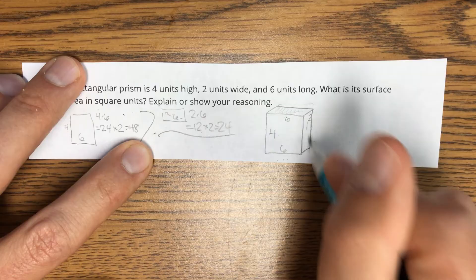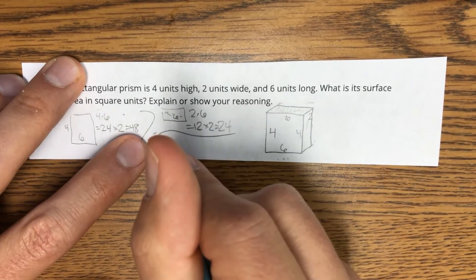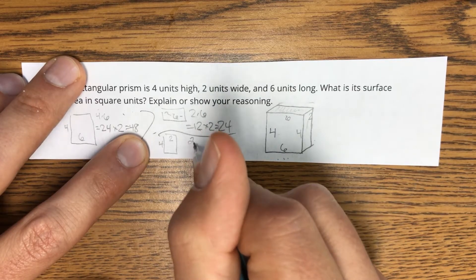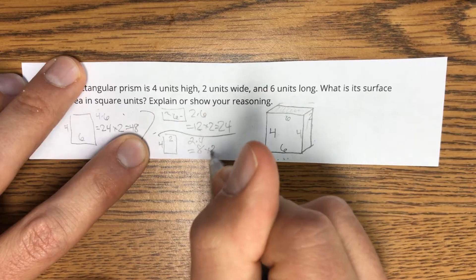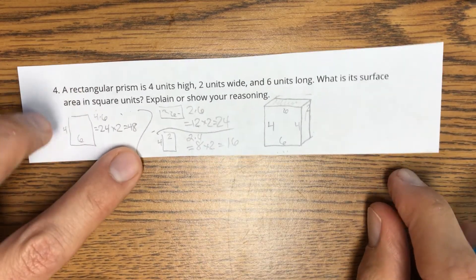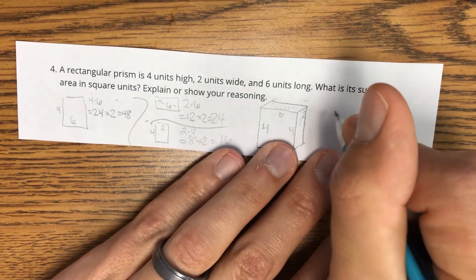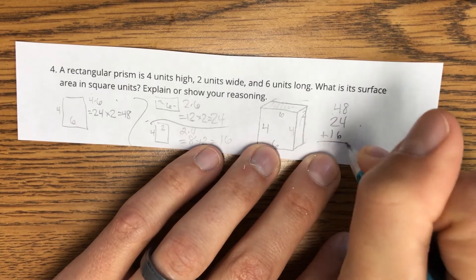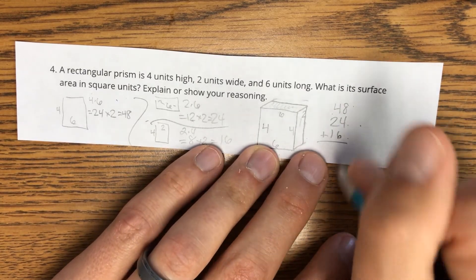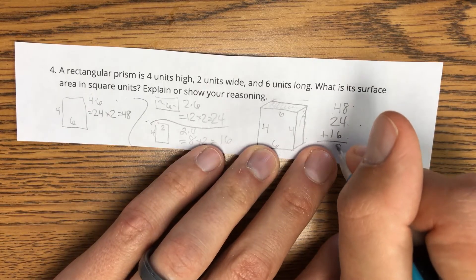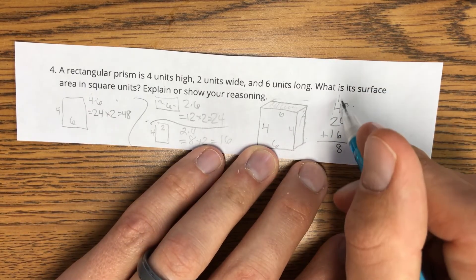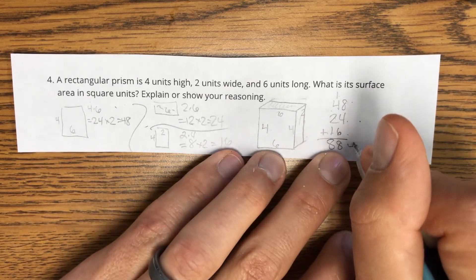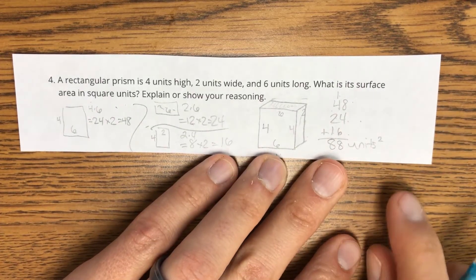What about this side over here? Looks like it's going to be two by four. So two times four is eight. And double that to get 16. Then add up those six sides. 48, 24, and 16 for those six faces, because remember we doubled it already. And we get 88 square units is my solution to question number four.